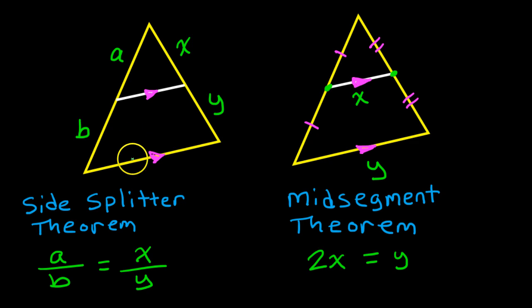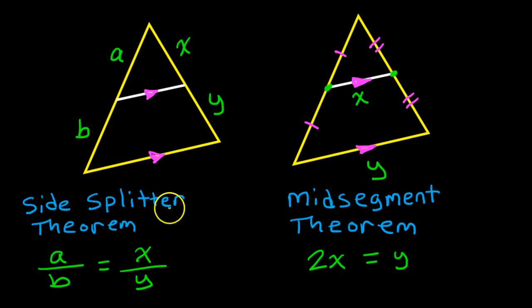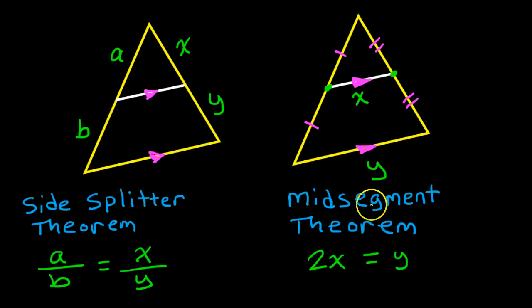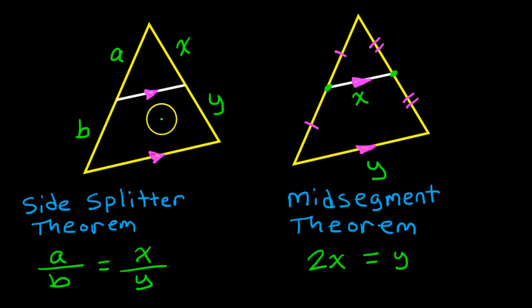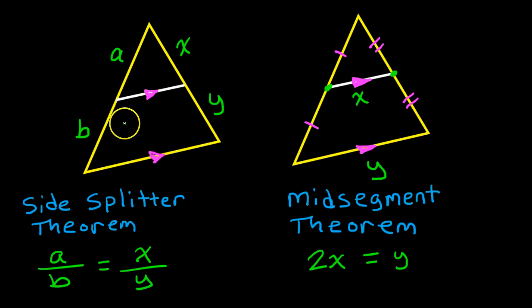Notice that the two theorems deal with completely different parts of the triangle. For the side-splitter theorem, we're dealing with the sides of the triangle. For the mid-segment theorem, we're dealing with the mid-segment and the parallel side. So when doing the side-splitter theorem, we are not going to do anything with the segment in the middle.